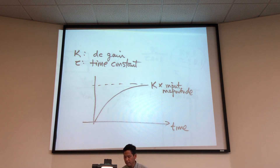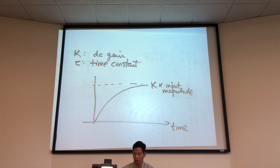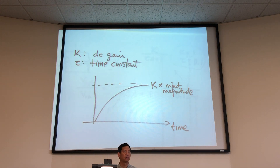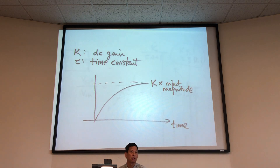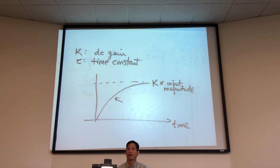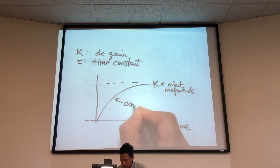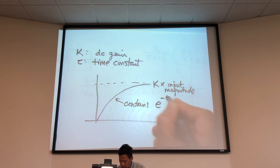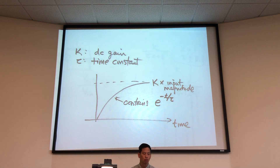So if our default input is 1, then K times 1 will be the final value of this exponential function, assuming initial conditions are zero. The time constant tells us how quickly the system is going to respond. Working through the calculus or Laplace transform, we find the function contains a term e to the minus t over τ — that's where the time constant comes in. The response is characterized in time by the time constant.